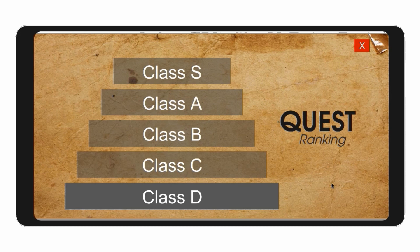There are 5 quest rankings namely Class D, C, B, A, and S — Class D as the simplest and Class S as the hardest. You have to answer a certain number of quests to be promoted to the next class.